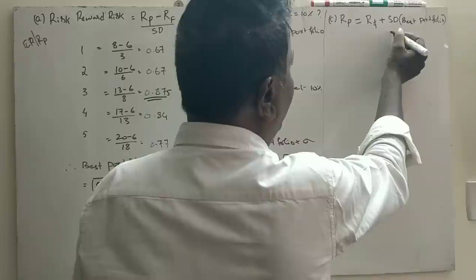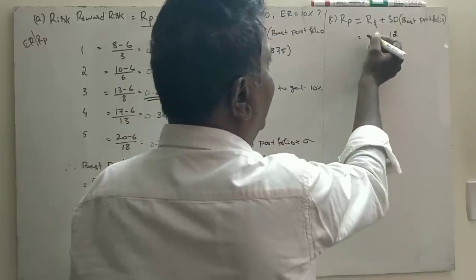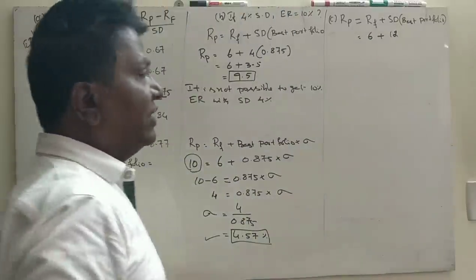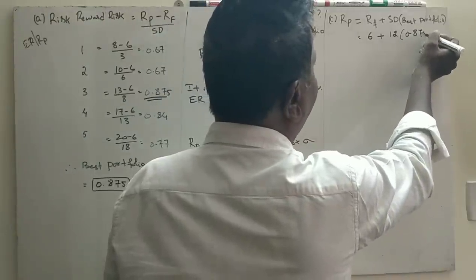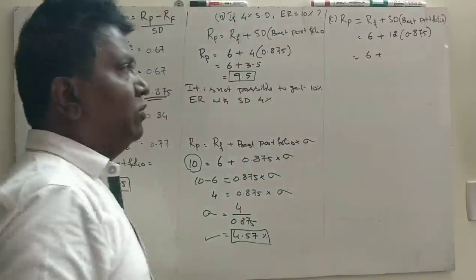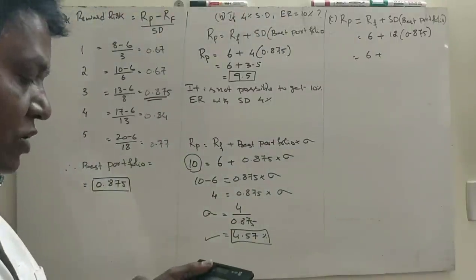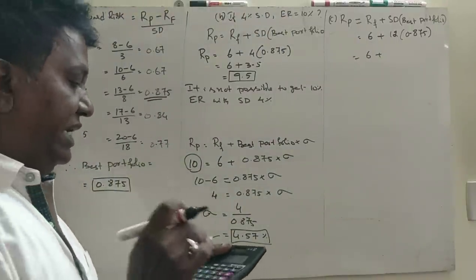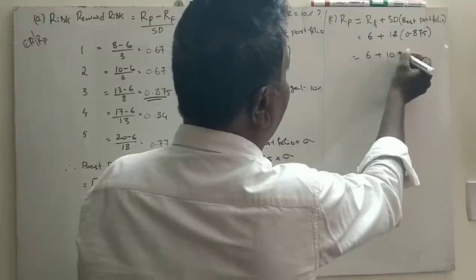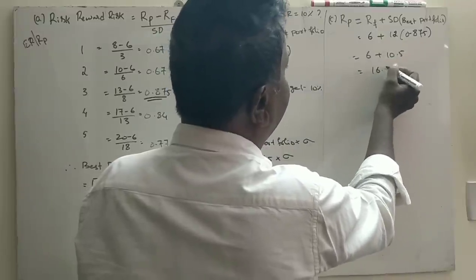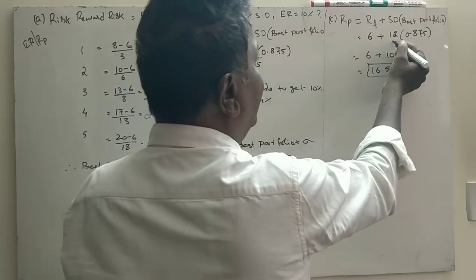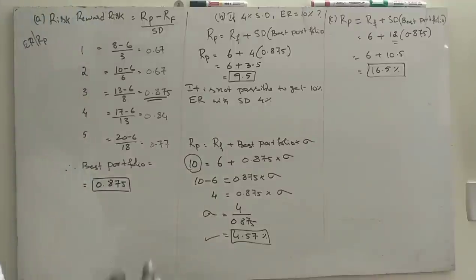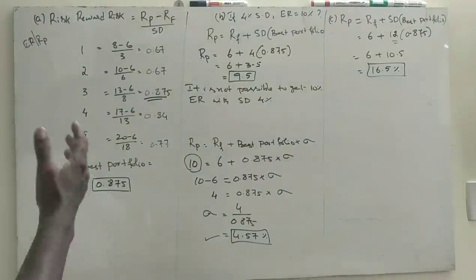For the third question, suppose the standard deviation is 12%. Using the best portfolio ratio of 0.875: return on portfolio equals 6 plus 0.875 times 12 = 16.5%. So if your standard deviation is 12%, the expected return is 16.5%. This is simple and easy to understand.